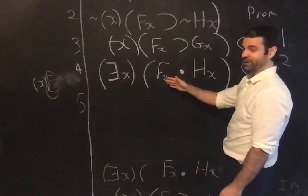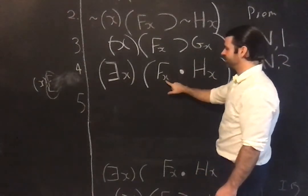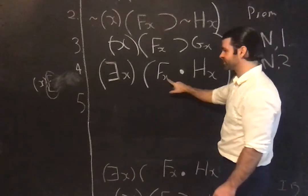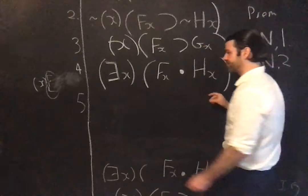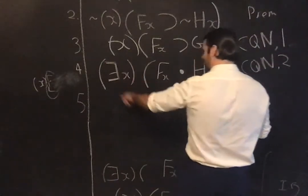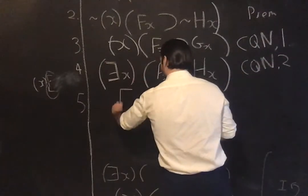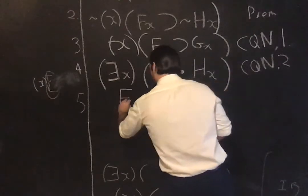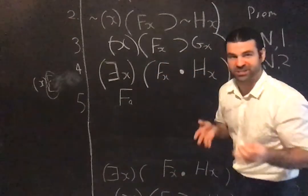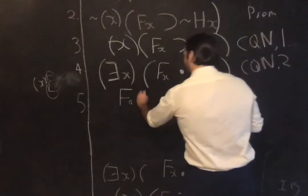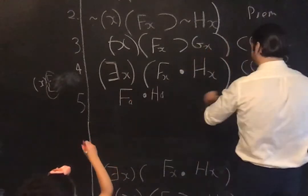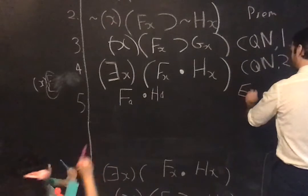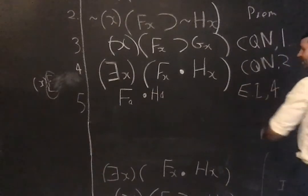So what is instantiation? You delete the quantifier, and you replace the variable quantified over, or the instance of this variable, so the X, with the same instance letter. So I forget about the quantifier, I delete that, and I just write F, replacing X with A, I'm instantiating to the individual A, and HA, right? That's the result of instantiating, that's EI form.